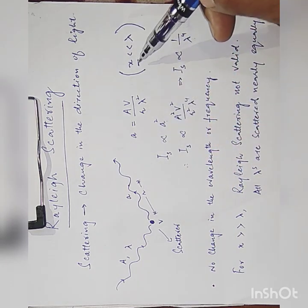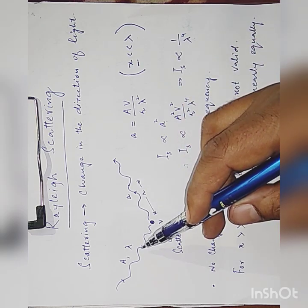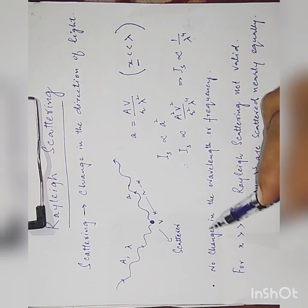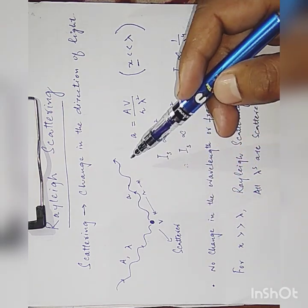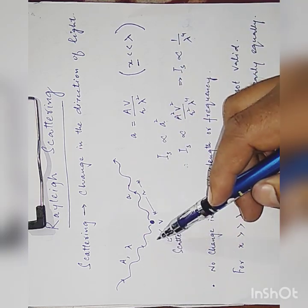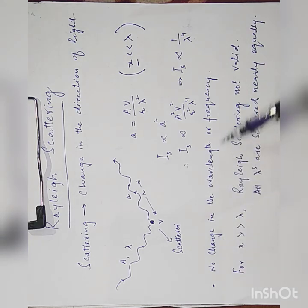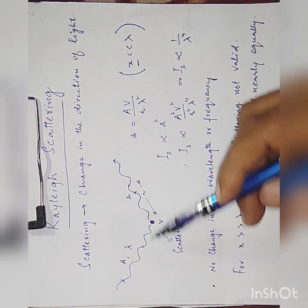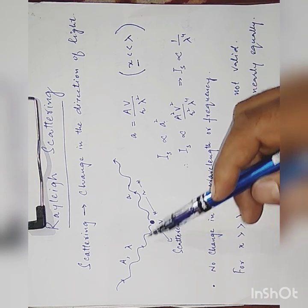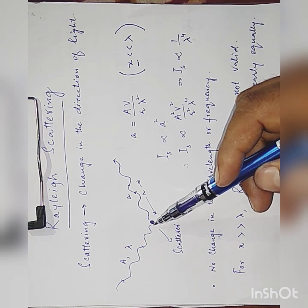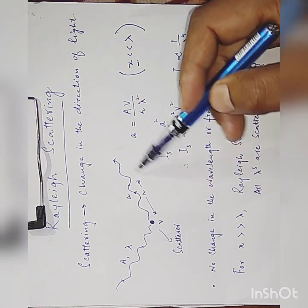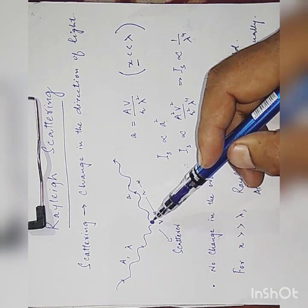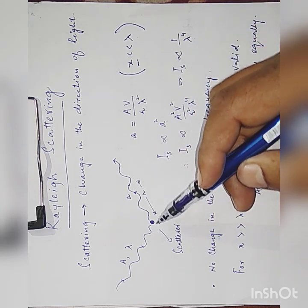Now, assuming that the particle's size is very, very less than lambda, we consider this scattering to be Rayleigh scattering. In such a case, normally we observe that the scattered light's wavelength or frequency is equal to the frequency or wavelength of incident radiation — there is no change in the wavelength or frequency. This is only possible when there is no exchange of energy between incident radiation and the particle itself. The collision happening between incident radiation and the scatterer is an elastic collision — there is no exchange of energy.